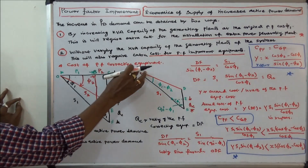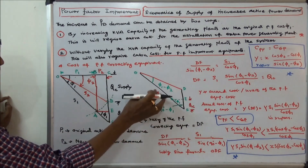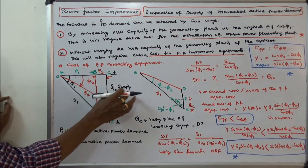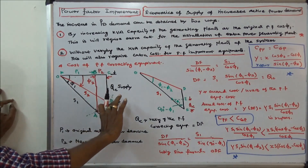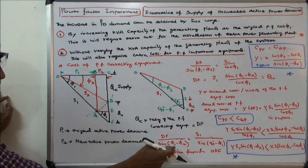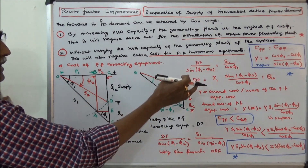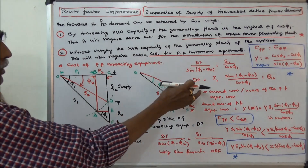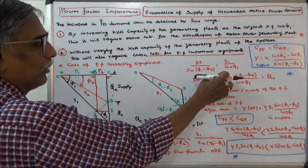Second case: cost of power factor correcting equipment. We consider the diagram ODF. This angle is phi 1 minus phi 2, this angle is phi 1, and this angle is 90 minus phi 1. Here QC is the reactive power supplied by the power factor correcting equipment. We have to calculate the rating of the power factor correcting equipment, that is DF. Using the sine formula: DF divided by sine(phi 1 minus phi 2) equals S1 divided by sine(90 minus phi 1), which equals S1 divided by cos phi 1. Therefore, DF — the rating of the power factor correcting equipment — is equal to S1 into sine(phi 1 minus phi 2) divided by cos phi 1.